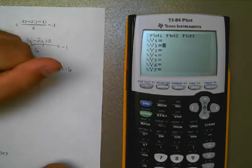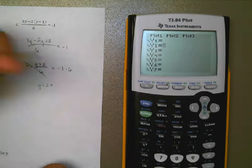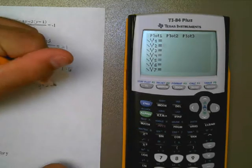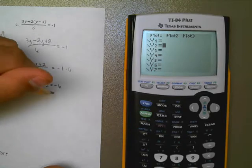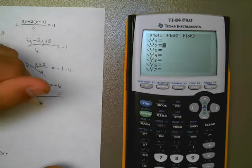On the left-hand side, I have y plus 2. On the right-hand side, I have negative 1 times 6, which is negative 6. And now, to get the y by itself, I've just got to subtract 2 from both sides, which leaves me with a y value of negative 8.